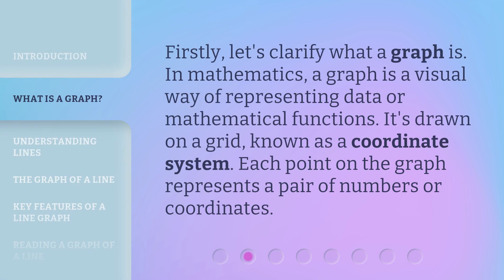Firstly, let's clarify what a graph is. In mathematics, a graph is a visual way of representing data or mathematical functions. It's drawn on a grid, known as a coordinate system. Each point on the graph represents a pair of numbers, or coordinates.